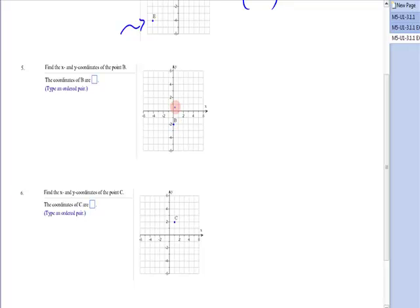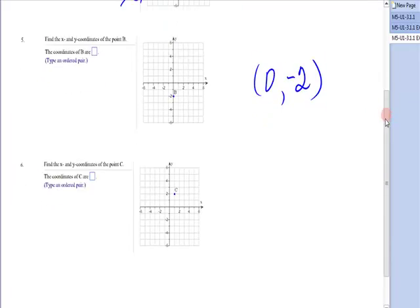Next, point B. The ordered pair from the origin to go, do you need to go right or left? No. So you move 0. To go vertically, I need to go down 2, which is a negative direction. So it is 0, negative 2.